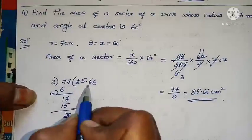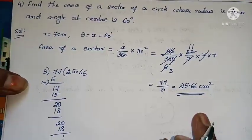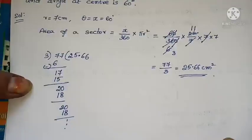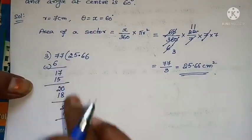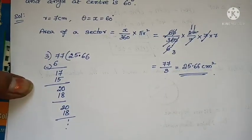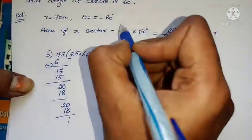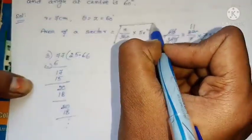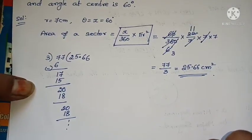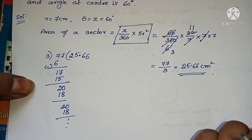The result comes out to approximately 25.67 square centimeters. The area of sector formula is x by 360 degrees into pi r squared. Substituting 60 by 360 into 22/7 into 7 squared, after simplification the answer is obtained. It is very simple.